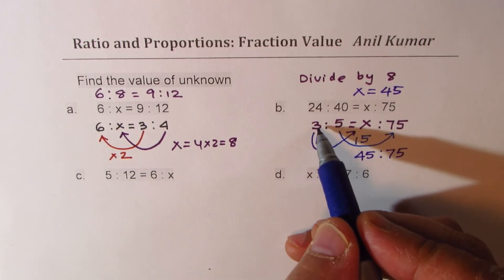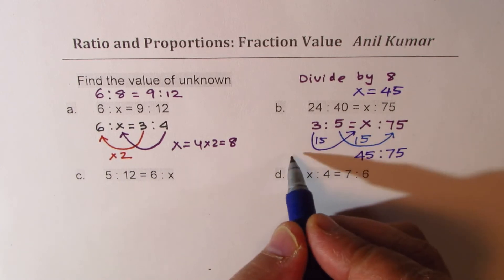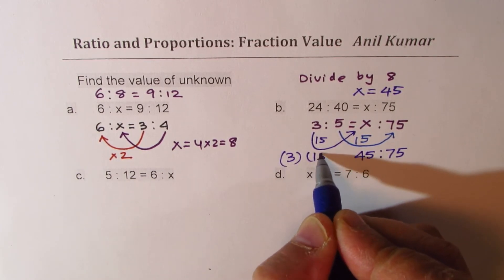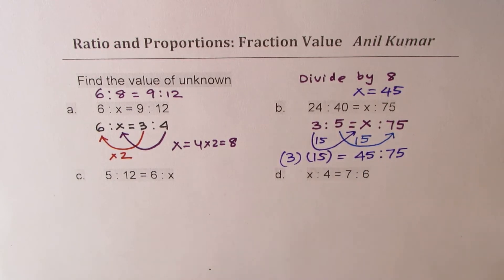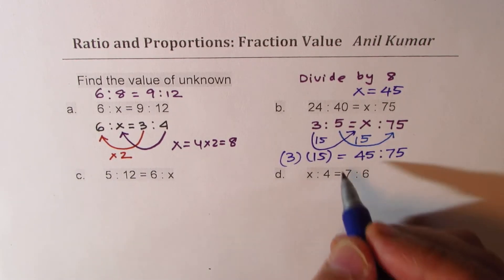How did I get it? I multiplied 3 with 15. So 3 times 15 gave me 45. Is that clear to you?